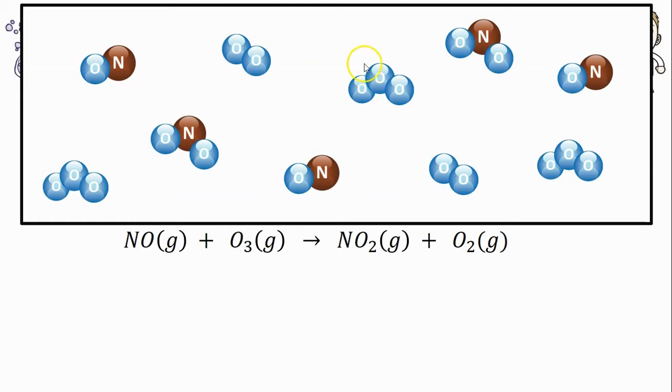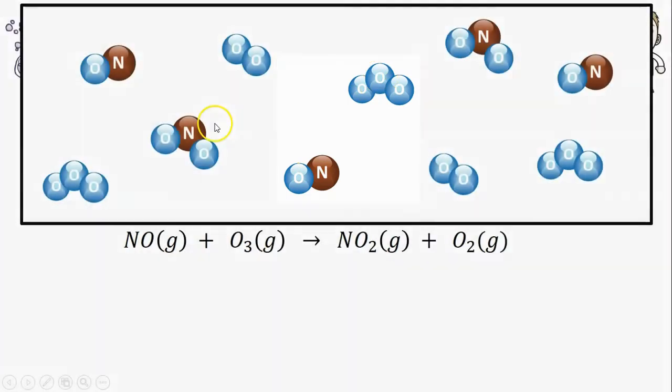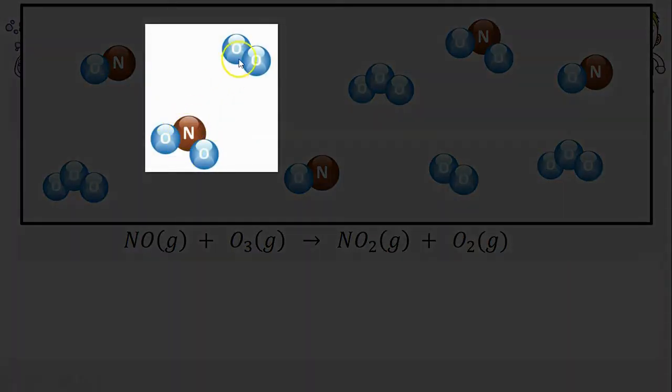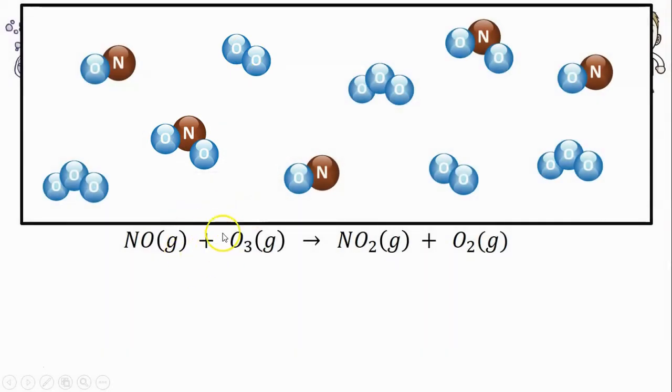There's many, many particles. So here in the closed container now is slightly more realistic. I've got some NOs and some O3s, but I've also got some products, some NO2s and some O2s. We're assuming some time has passed and these reactants have started to produce some of these products.